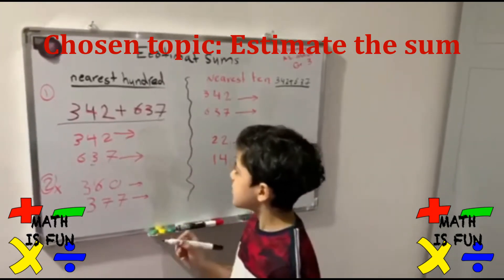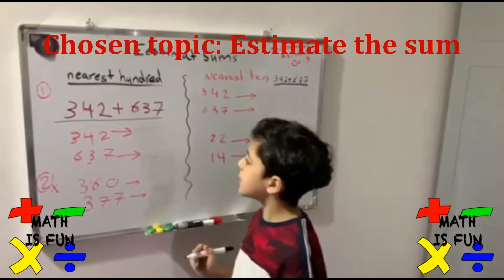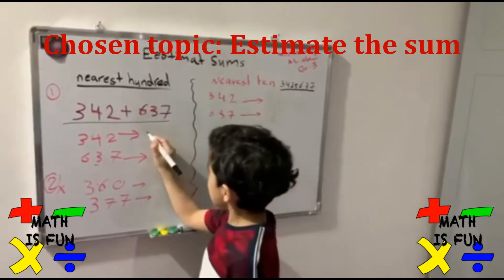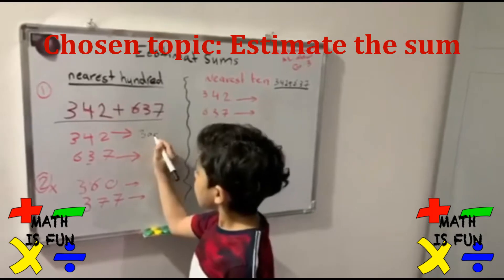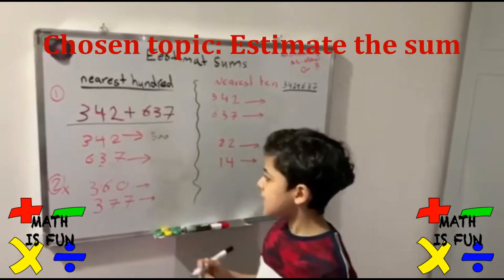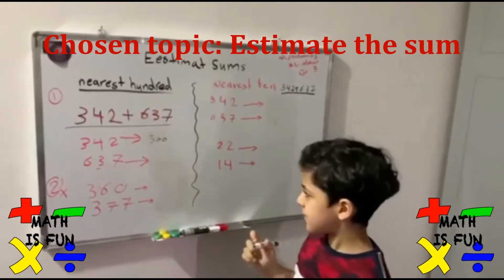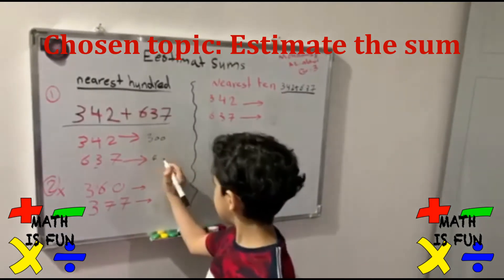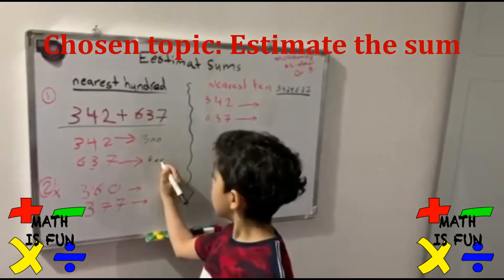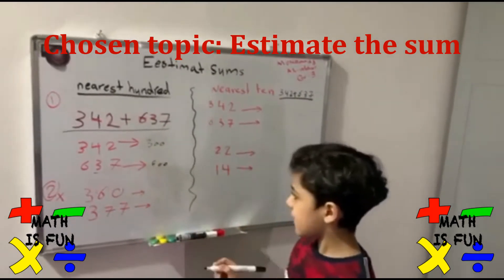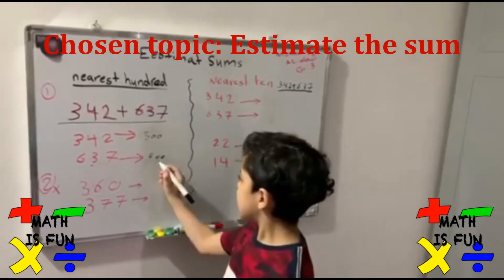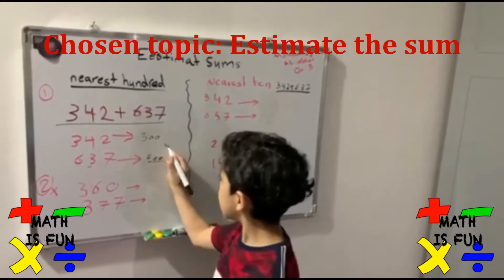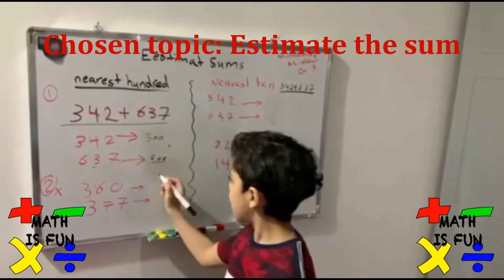242 plus 637. 242 is going to be 300. Why? Because the 40 is less than 50. 637 is going to be 600. Why? Because the 30 is less than 50. I'm going to add them: 300 plus 600 equals 900.